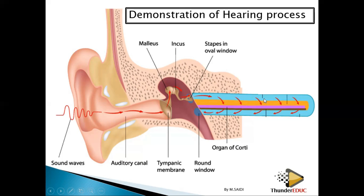Some of the wave or vibration enters the endolymph. It is called 'peri' because it is on the peripheral sides of the cochlea, outside. It is called 'endo' because it is inside. So the outside fluid is called perilymph and the inside fluid is called endolymph. The perilymph vibrates and some vibration enters the endolymph.